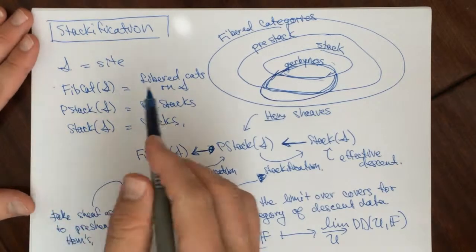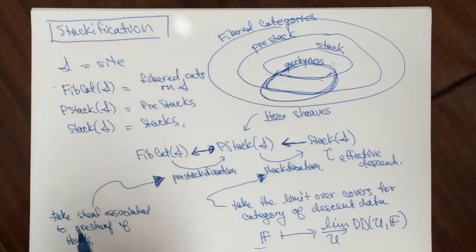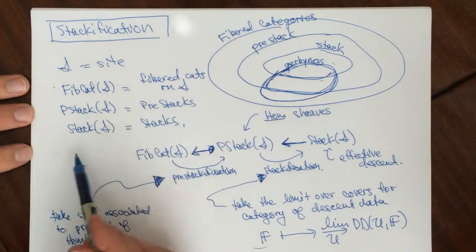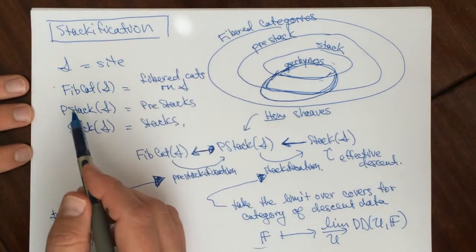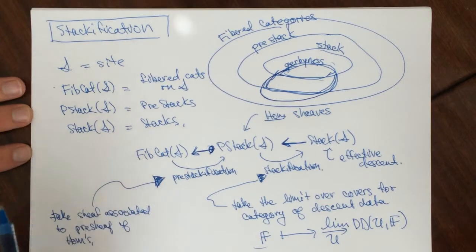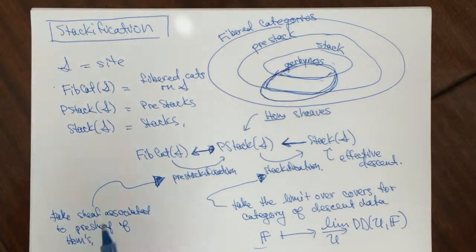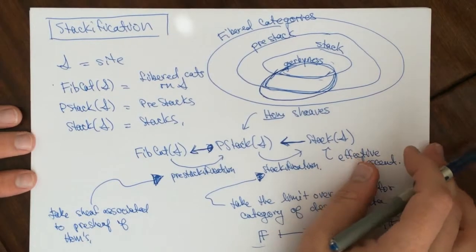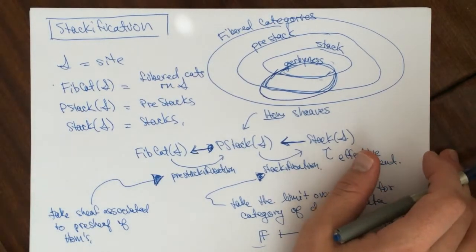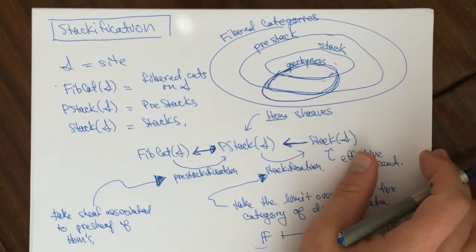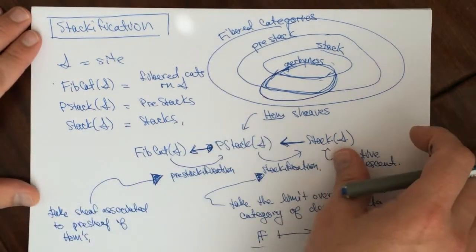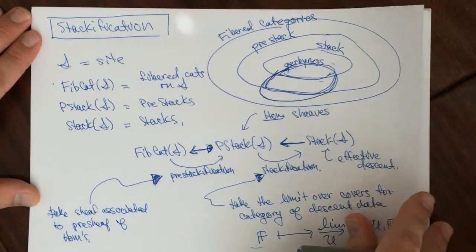Morphisms of stacks and pre-stacks are simply morphisms of fibered categories — there's nothing special about them. So morphisms of pre-stacks are morphisms of fibered categories, and morphisms of stacks are also just morphisms of fibered categories.